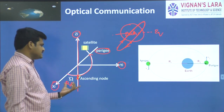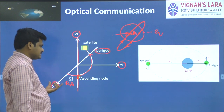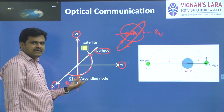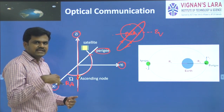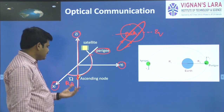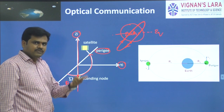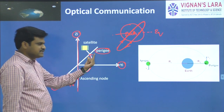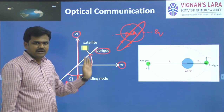Right ascension of ascending node means: the angular measurement from the x-axis to the perigee point, measured when the satellite is moving in the ascending direction — that is moving upward and crossing the equator. The angular measurement from the x-axis to that perigee point is called right ascension of ascending node.